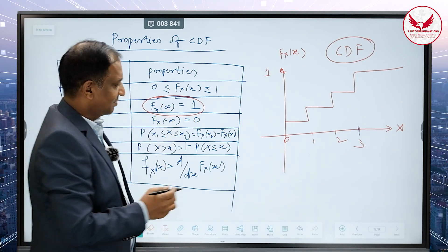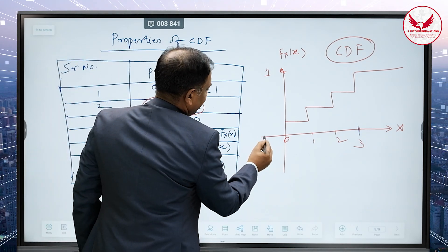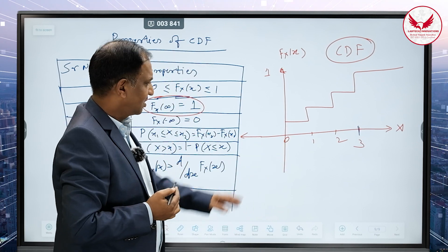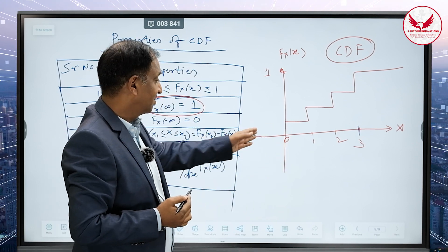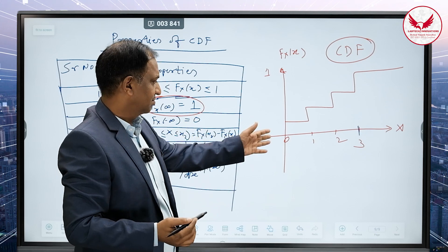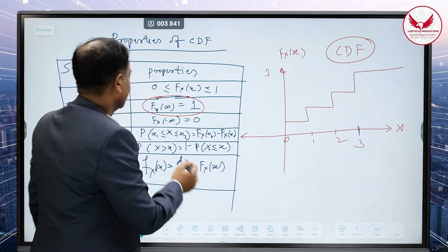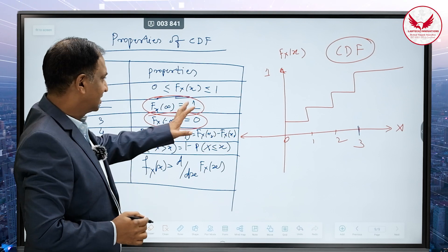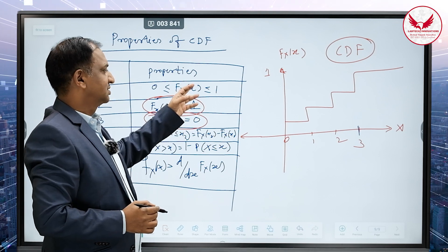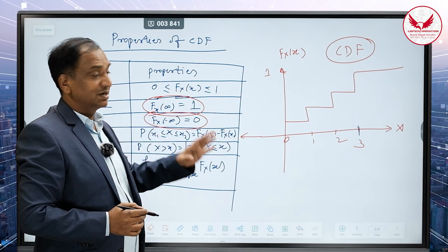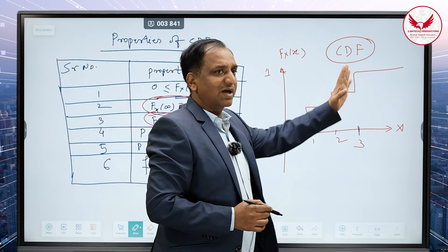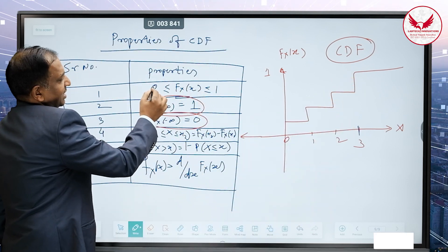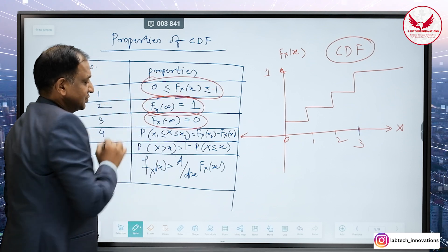The second thing: if you look at the probabilities from 0 to minus infinity, the probability of minus infinity is always 0 — F(−∞) is equal to 0. And we have seen the CDF for 0, 1, 2, 3, so it will never go beyond the values of 1. Therefore, the value of CDF is always between 0 and 1.